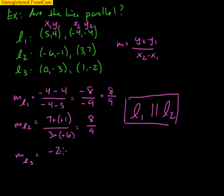Let's check out line three. We get -2 minus -3 over 1 minus 0. We do that minus minus equals plus. And we get -2 plus 3 is 1. 1 minus 0 is 1. And that's a slope of one. One is not equal to 8/9. So L3, line three is not parallel to lines two or line one.